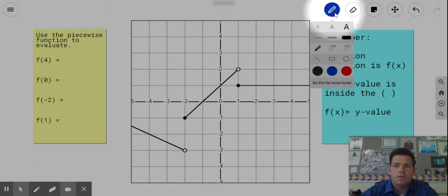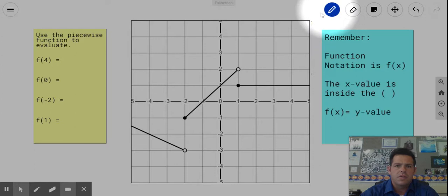The first thing I want to do here is I'm going to come over here and say we're going to use the piecewise function to evaluate. So we're looking specifically here at what's going on. We have f of four is equal to, f of zero, f of negative two, and f of one. We have four different problems we're going to take a look at here, try to find them on this graph.